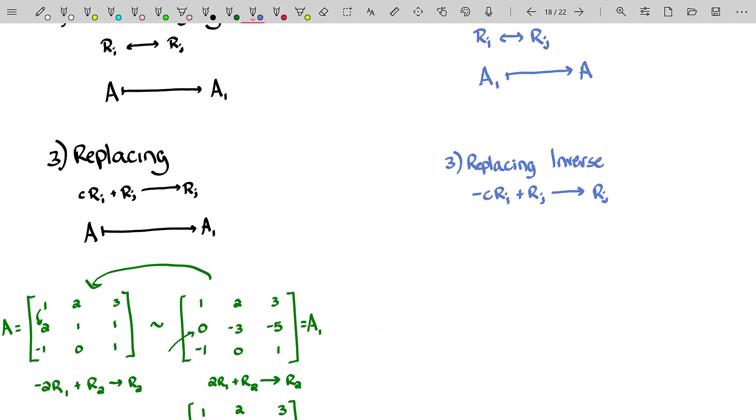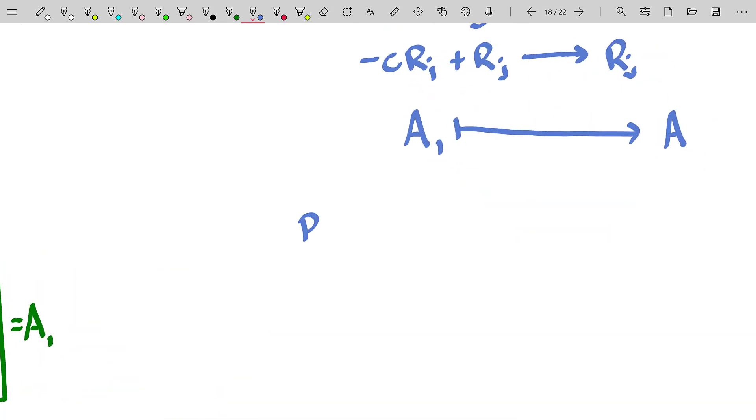And of course that takes our new matrix A sub 1 and transforms it back into the old matrix A. Now you may say, well, you didn't really prove that that gets to the original row J. Eh, you kind of did actually.